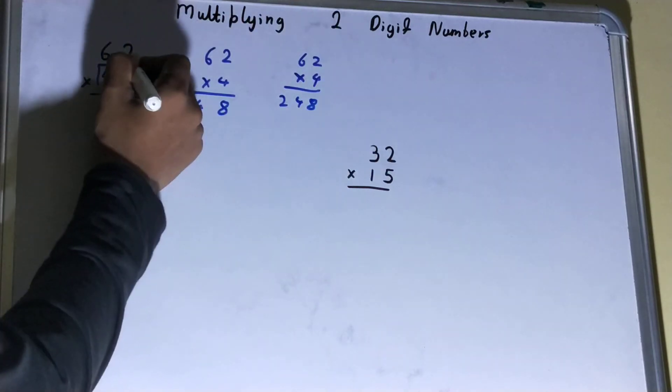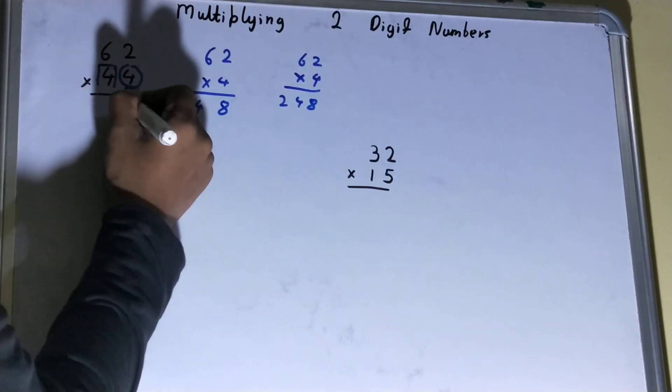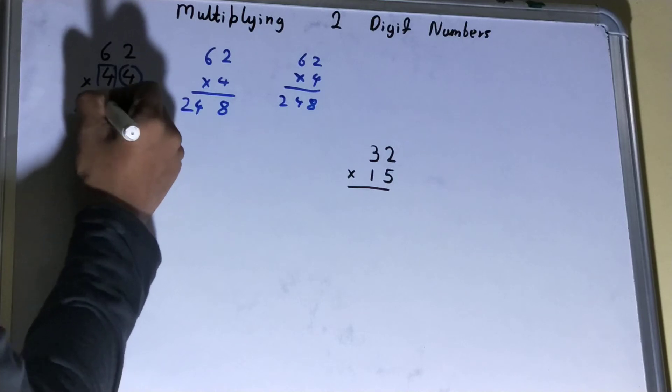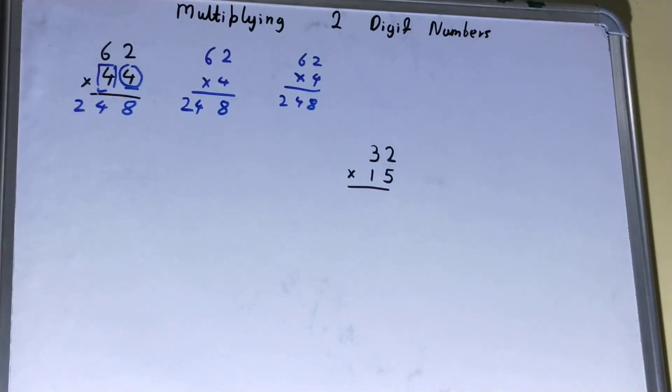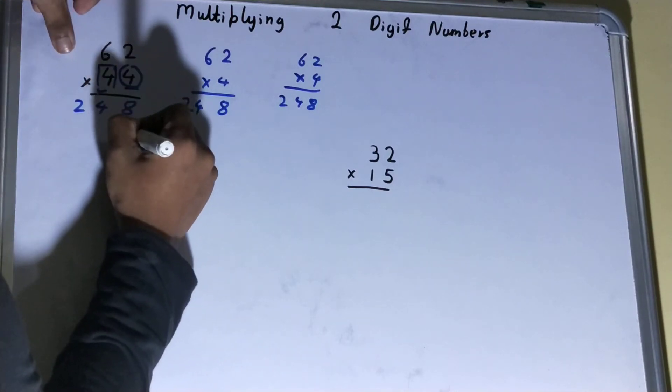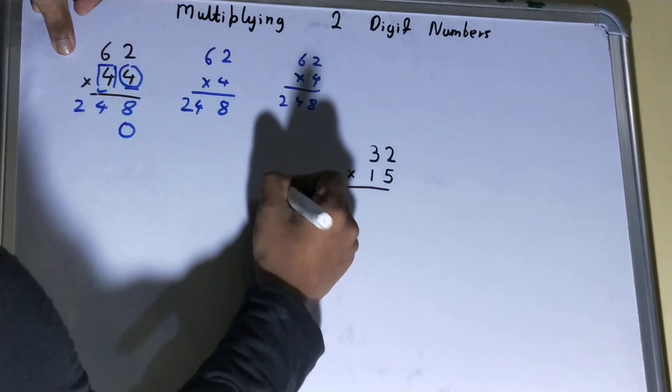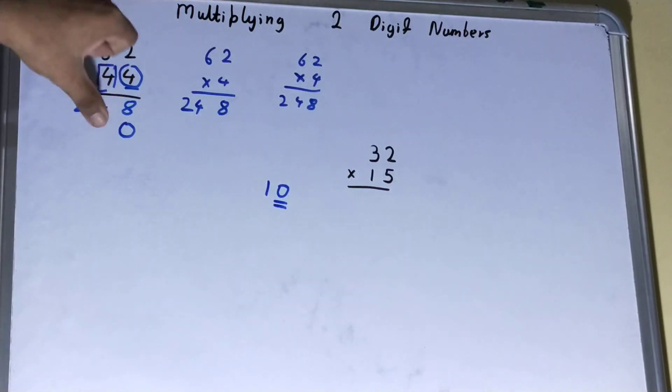That is the number that is present in the tens digit, we need to put an extra zero. Because the tens digit has a zero, right? So we put a placeholder, or extra zero, and then we'll put the answer: 8, then 4, then 2.